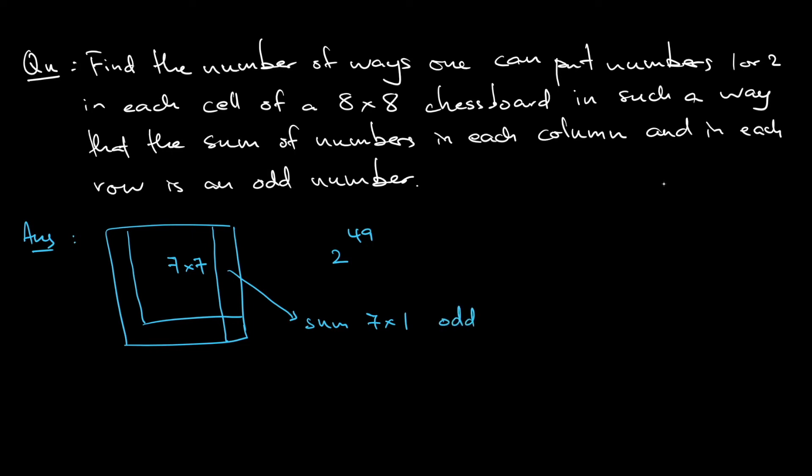And when it is odd, all I need to do is that this number, this cell, if it's already odd, remember at the end we want the sum in the column to be odd, right? All I need to do is just I need to put 2, the last cell. So if the sum in the 7 by 1 column happened to be an even number, I put 1. So now the sum of the 8 by 1 column is always an odd number.